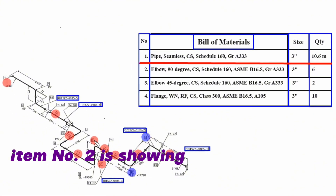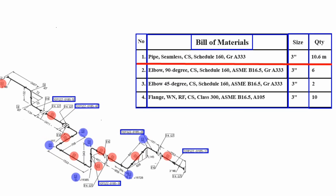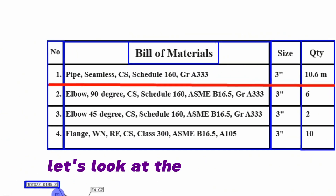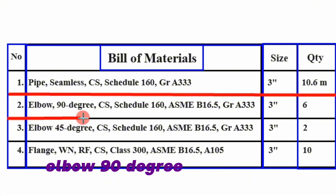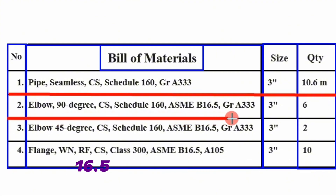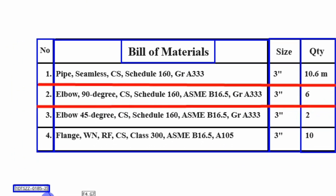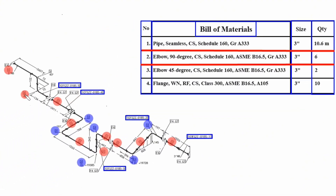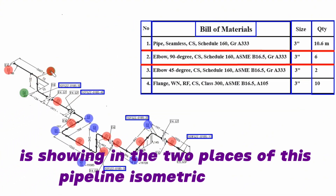Item number 2 is shown in six places of this pipeline drawing. Item number 2 is also shown in two places of this pipeline isometric drawing.